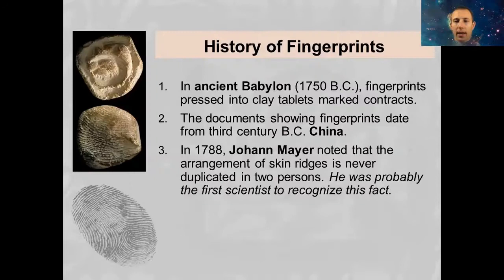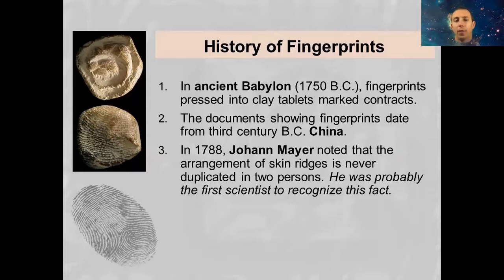Minutia are basically the small little parts of your fingerprints that are unique specifically to you. Where those points of minutia are is what we use to identify someone based on their fingerprint. Now, fingerprints have actually been used quite a bit throughout human history. They were first used as identifying markers for things like contracts. It was actually the ancient Chinese who figured out that everyone's fingerprints were unique just to them. It wasn't until the late 1700s and 1800s that we started to really use fingerprints for crime scene analysis.